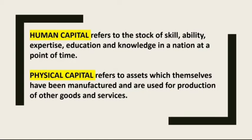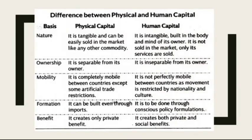Let's discuss the differentiation between physical and human capital. The first basis of differentiation is nature. In physical capital, it is tangible and can be easily sold in the market like any other commodity. In human capital, it is tangible but built into the body and mind of its owner — it is not sold in the market; only its services are sold.